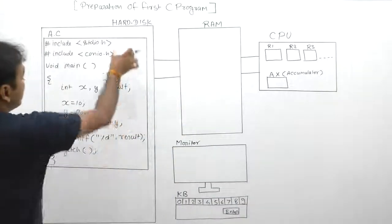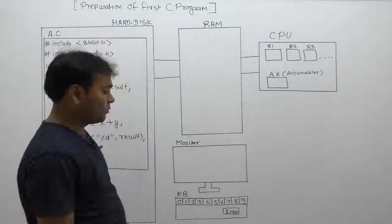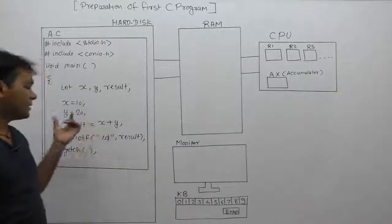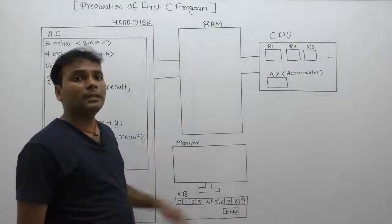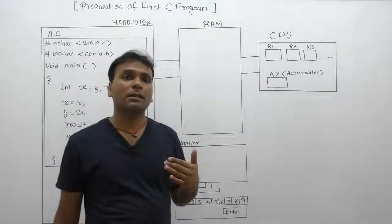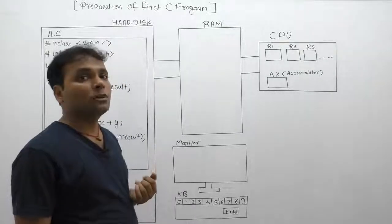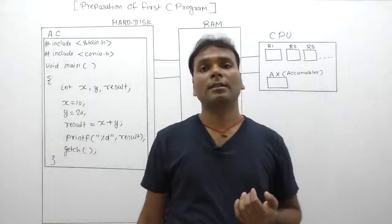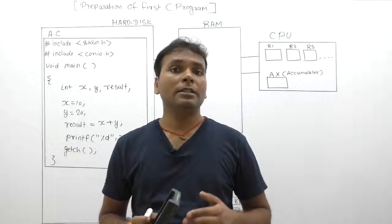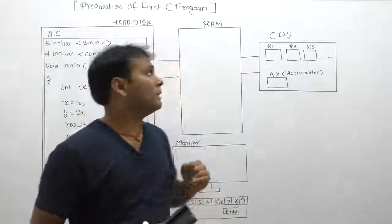In the diagram we have: hard disk memory, keyboard, monitor, RAM, and processor. For a C program, if any input is required it comes from the keyboard. Here we are directly assigning values, so there is no need for keyboard input. The monitor is required to display output results. The C program source code is permanently stored on the hard disk. During execution, all instructions must be available inside RAM and are executed by the processor.